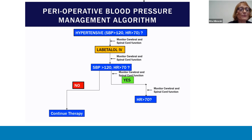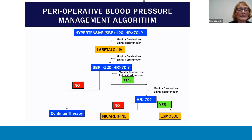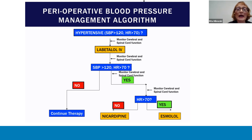Beta blockers are primarily utilized, if tolerated, to reduce the force of contraction on the aortic wall — the dP/dT — which can lead to continued weakening of the arterial wall. If a beta blocker cannot be utilized, nicardipine and esmolol can be used as alternatives. Utilizing this algorithmic approach, blood pressure can be appropriately titrated utilizing neurologic and hemodynamic parameters.